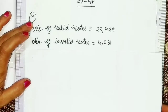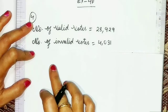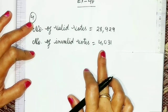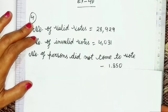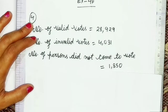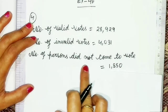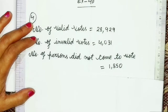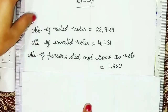The second statement is: the number of invalid votes is equal to 4,031. The third statement: the number of persons who did not come to vote is equal to 1,850.